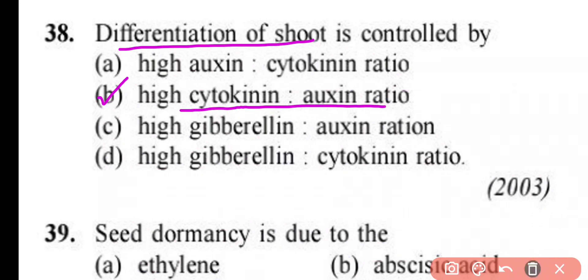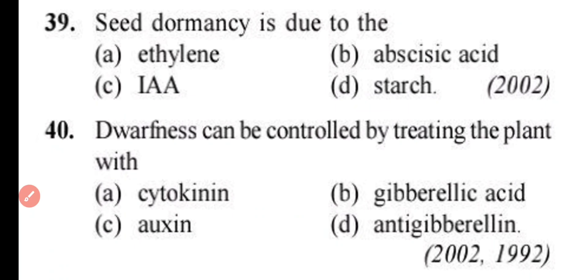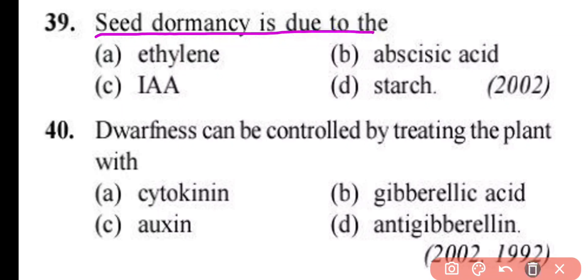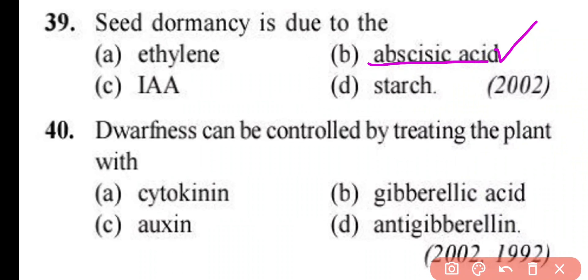Question number 39. Seed dormancy is due to: ethylene, abscisic acid, indole acetic acid, or starch. Correct answer is option B. Seed dormancy is caused by the growth inhibitor abscisic acid.